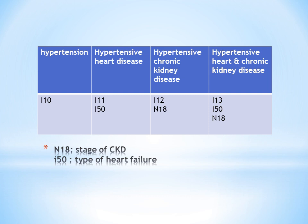So, if you connect it this way: just hypertension is I10; hypertension with heart disease is I11; hypertension with chronic kidney disease is I12; and hypertension with both heart and kidney disease is I13. Now we have four main hypertension codes.